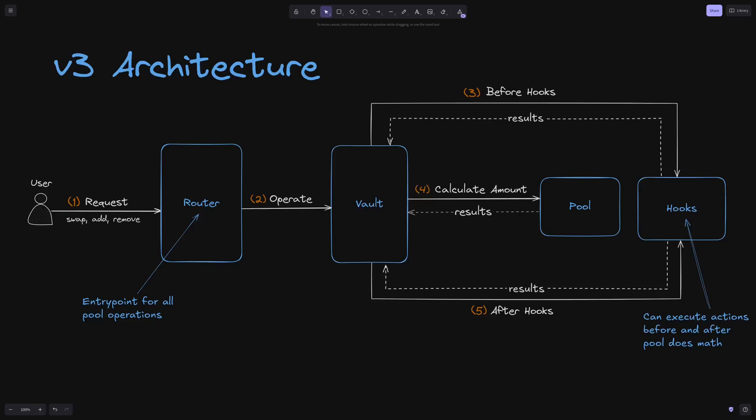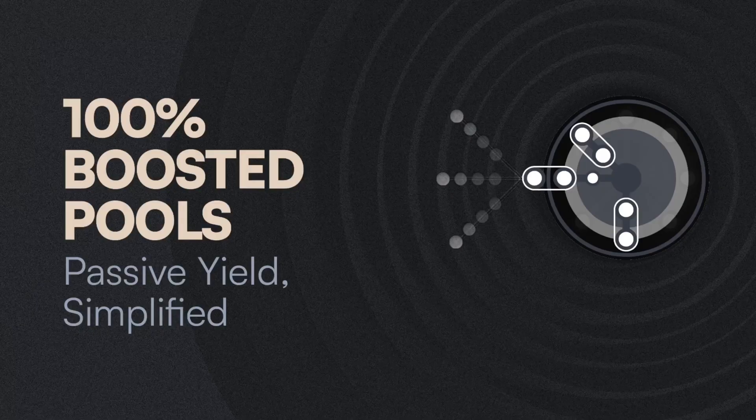Hooks execute actions to the pool contract to calculate amounts depending on the type of operation. Additionally, V3 also celebrates the return of boosted pools, which can route up to 100% of liquidity to external yield markets.